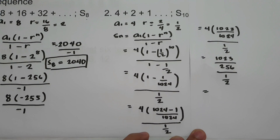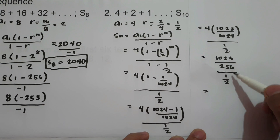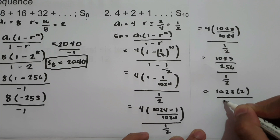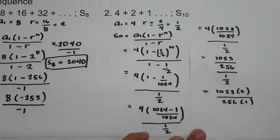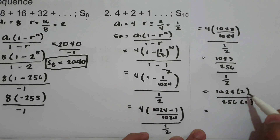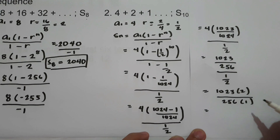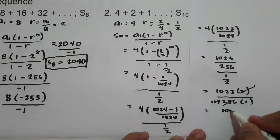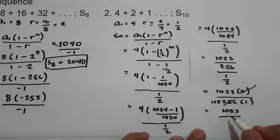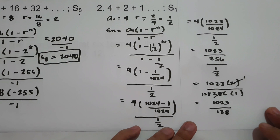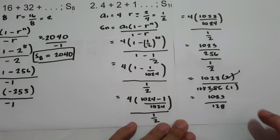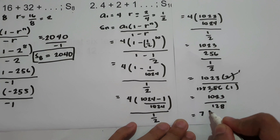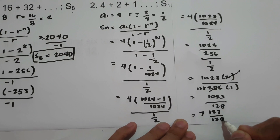Dividing by 1 half means multiplying by 2: we have 1023 times 2 over 256 times 1. Since the greatest common factor of 2 and 256 is 2, this simplifies to 1023 times 1 over 128 times 1, which is 1023 over 128. Converting to a mixed number: how many 128s are there in 1023? That is 7, with a remainder of 127. So the final answer is 7 and 127 over 128.